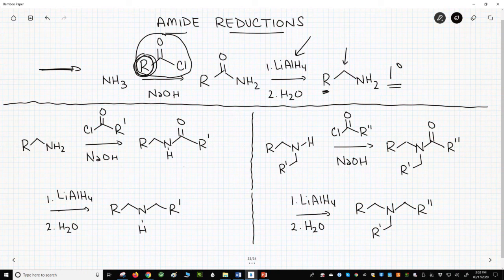Those are shown at the bottom of the slide. To the left, a primary amine plus an acid chloride makes an amide reduced with LAH to make a secondary amine.